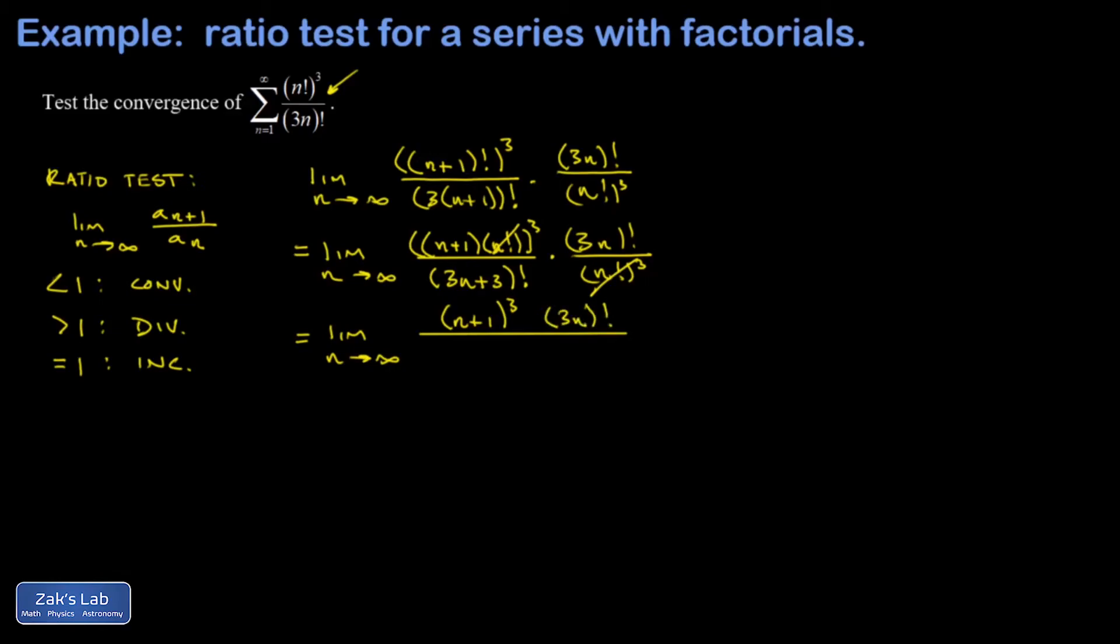The thing that's left in the denominator, (3n+3) factorial, I can start splitting terms off the front. So I have (3n+3) multiplied by (3n+2), multiplied by (3n+1), and finally I get to 3n and so on. In other words, the leftover term here is 3n factorial. Now I can cancel that term out of the numerator and denominator.